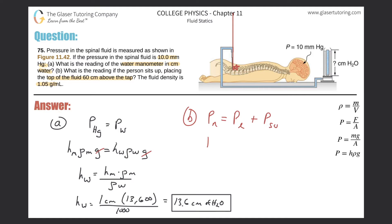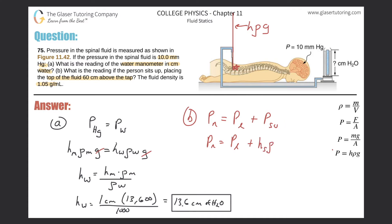The new pressure when the person is upright equals the pressure when lying down plus the additional pressure from standing. So: new pressure equals pressure lying down — which we found is 13.6 cm H2O — plus the pressure due to the standing fluid column, which is height of spinal fluid times density of spinal fluid times gravity. We need to make sure all units are consistent.